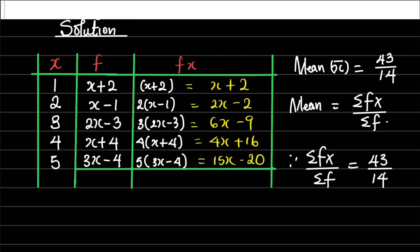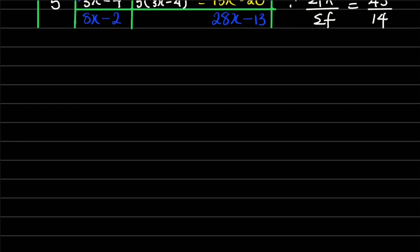Now the next thing is to get the summation. I'm going to add everything under the column of f which is the frequency. Now this is how you add it: you make sure you pick this x plus 2x plus x plus 3x. Adding it, I'm gonna have 8x. Then 2 minus 1 minus 3 plus 4 minus 4, I'm going to have minus 2, so I'm done with that. Then I'll do same thing here: x plus 2x plus 6x plus 4x plus 15x will give me 28x. Then I have 2 minus 2 minus 9 plus 16 minus 20, I'm gonna have minus 13.